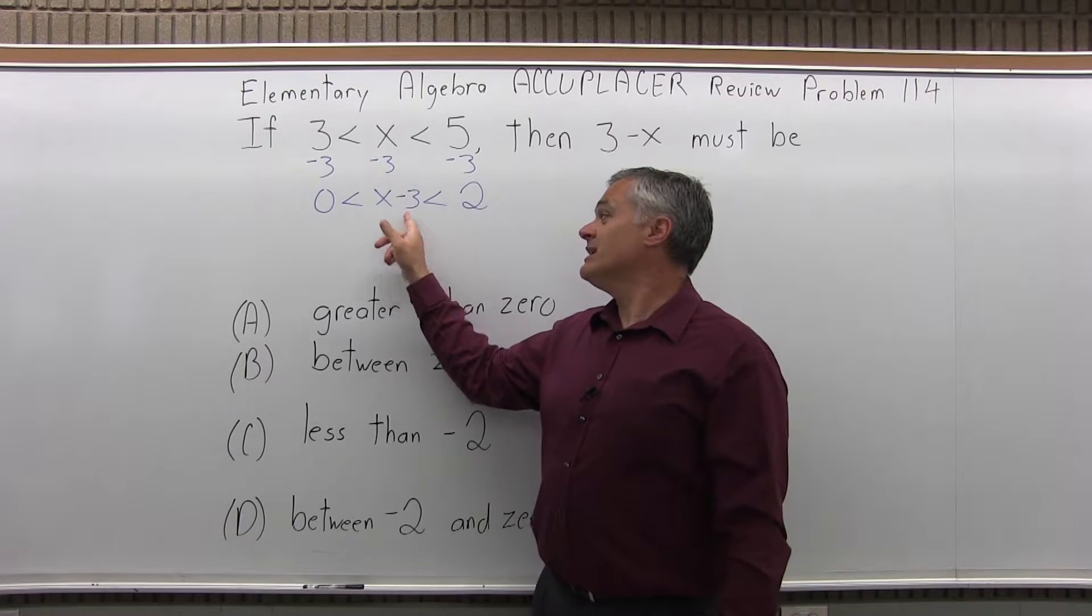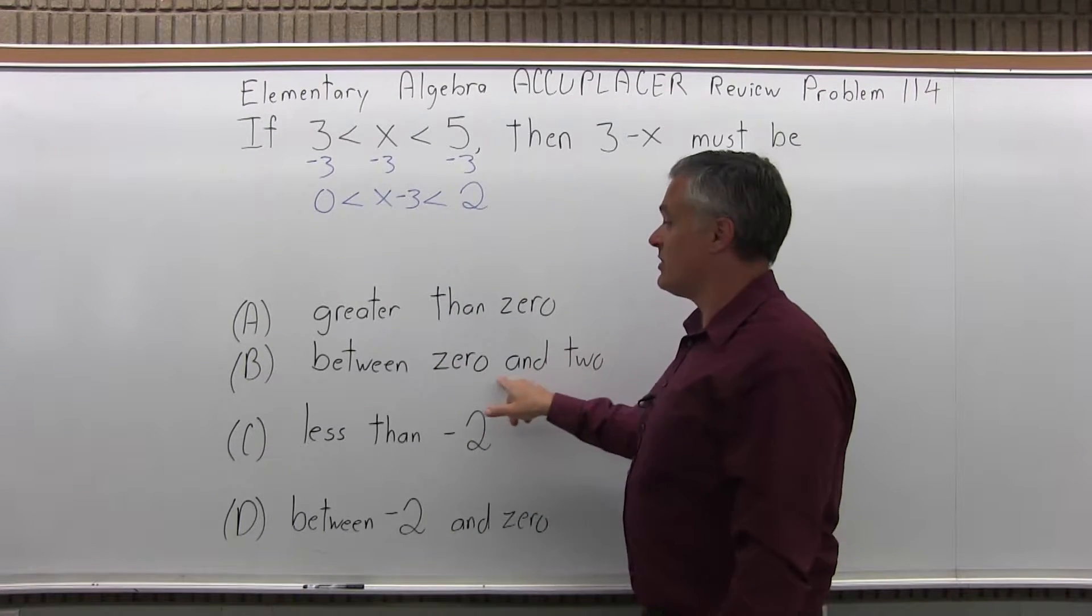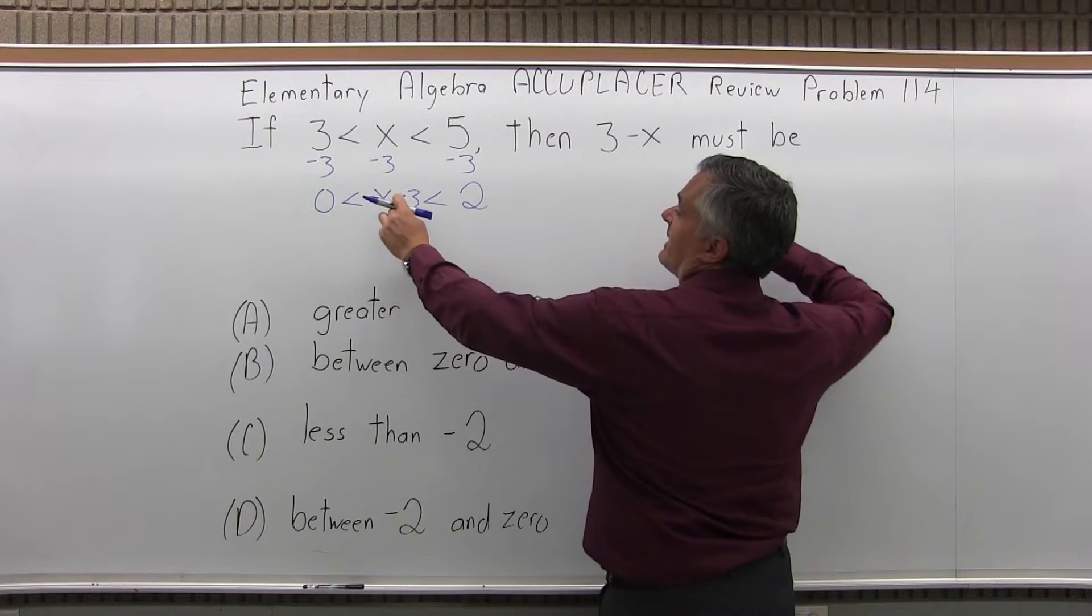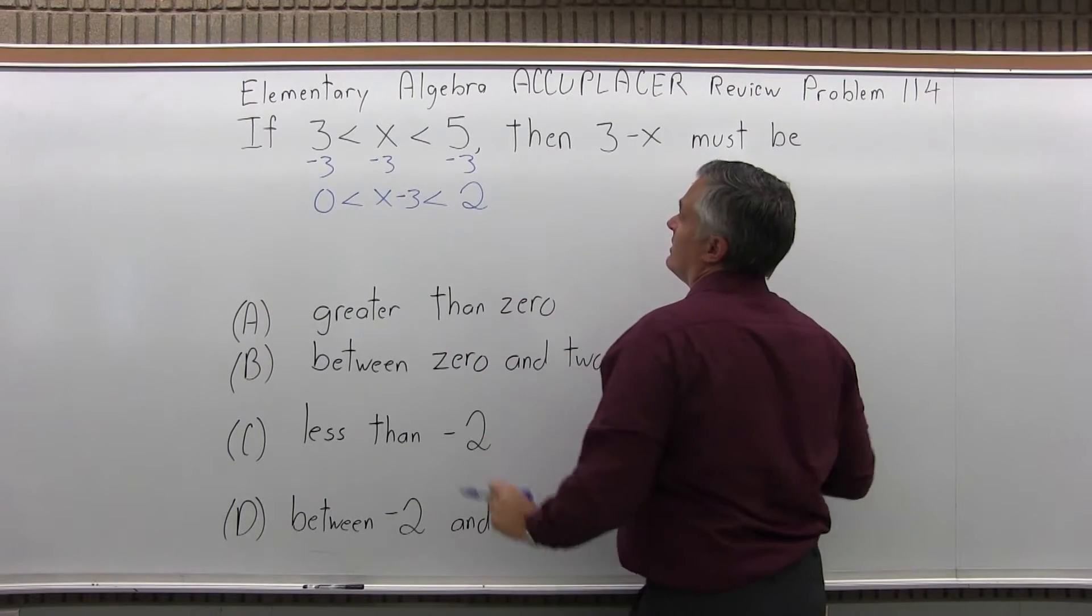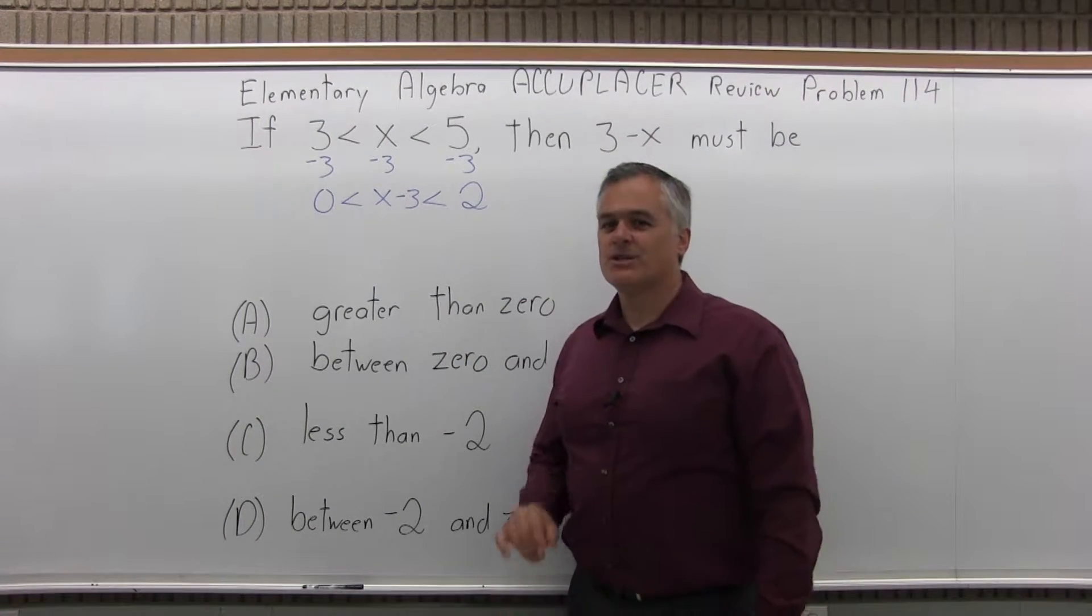Now, that's not the answer. That's probably one of them, between 0 and 2, because they want you to miss the fact that we found x minus 3, but they asked for 3 minus x.